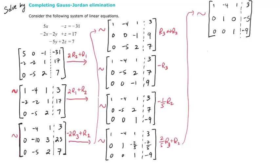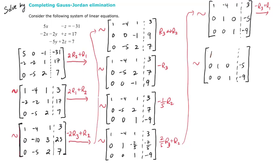Now we're ready to make another 0 in the first row. Let's do negative row 3 added to row 1 — that's row equivalent to the next matrix. Row 1 changes, row 3 and row 2 do not. We have 1, negative 4, then a 0, and then 9 plus 3 is 12. One more 0 to go — we're going to do 4 times row 2 added to row 1. Remember this tilde means row equivalent, not an equal sign.